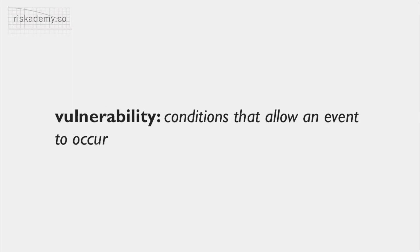The second component of a risk is vulnerability, essentially describing the conditions that allow an event to occur or those that might prevent it. Vulnerabilities exist due to proximity to a threat, because of inadequate preventative measures, or where there are poor or non-existent controls. Conversely, robust controls or separation from a threat will lower vulnerability. Vulnerabilities relate to both physical and non-physical threats, so both poor physical security and weak corporate governance create vulnerabilities. For upside risk we can use the term exposure.